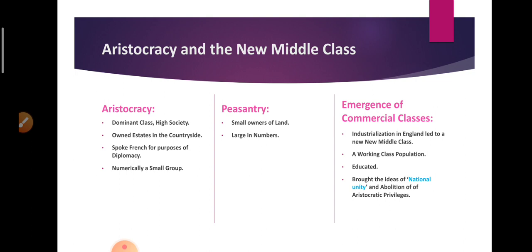With industrialization happening in England, a new social group came into being — the middle class. This middle class constituted businessmen, professionals, teachers, industrialists, and so on. These people were educated and they brought the idea of national unity.